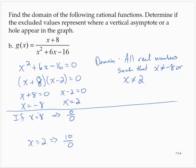This is the situation we saw before, the 10 over 0. So when x equals 2, we have a vertical asymptote in the graph.